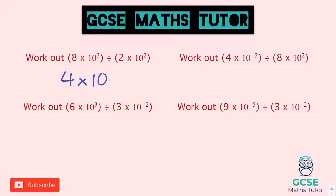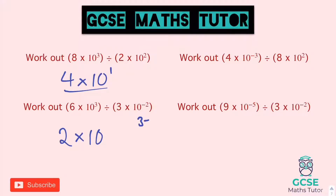First: 8 divided by 2 is 4. Powers: 3 take away 2 equals 1. Final answer: 4 times 10 to the power of 1. Second: 6 divided by 3 is 2. Powers: 3 take away negative 2 is 3 plus 2, equals 5. Final answer: 2 times 10 to the 5.